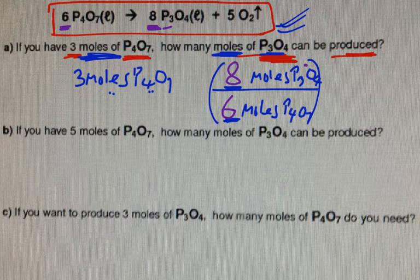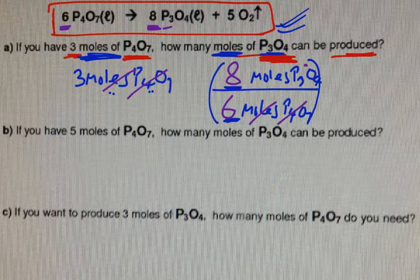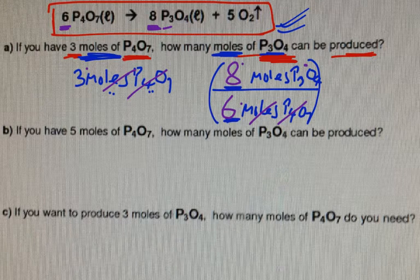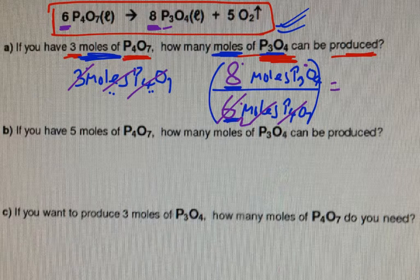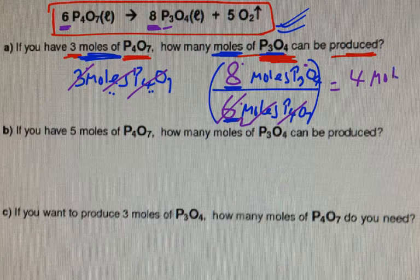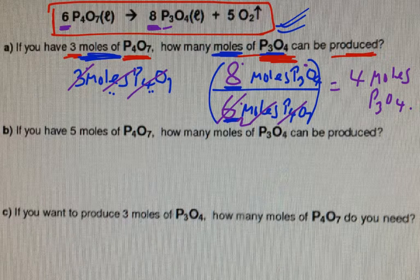Now, what's going to happen next simply is this. Moles P₄O₇, moles P₄O₇ will cancel. You have 3, you have 8, and you have 6 right here. So you can simply say 3 into 6 is 2. 2 into 8 equals to 4. That's your answer for moles of P₃O₄, and you're done. Next one.